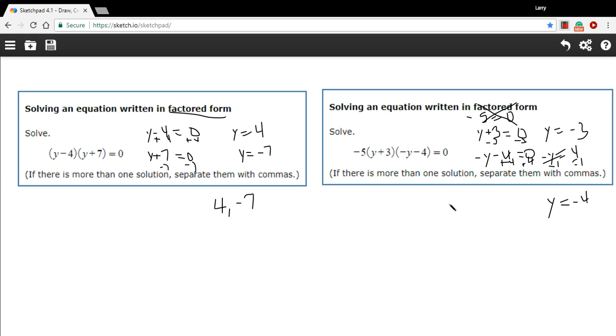And so when we write our answer, we would write them separated by commas. So negative three, comma, negative four. So that is how to solve equations written in factored form.